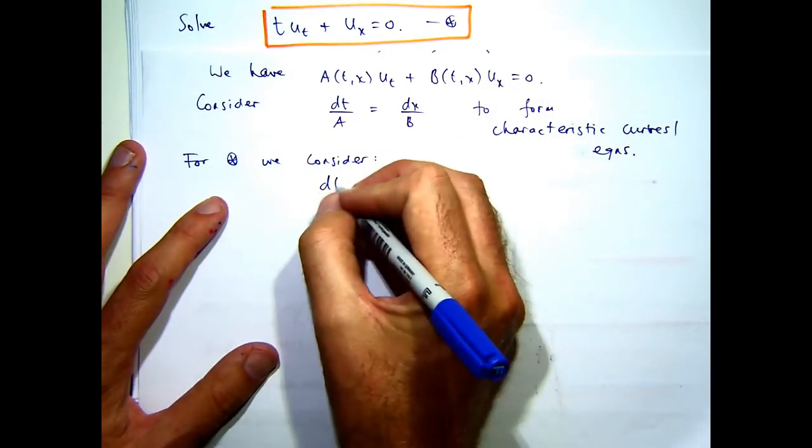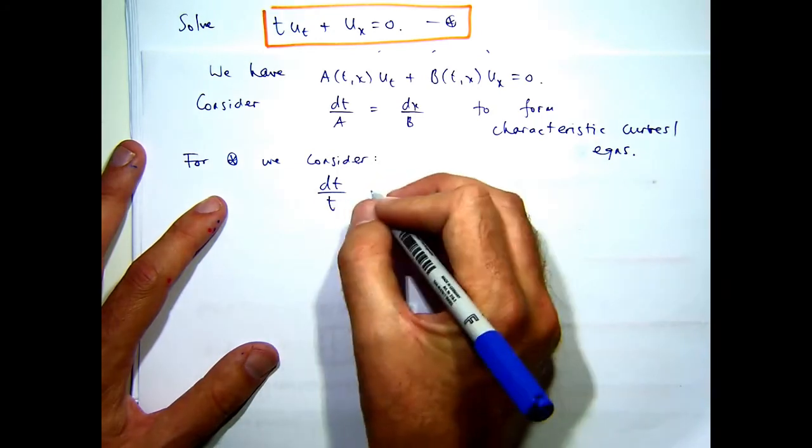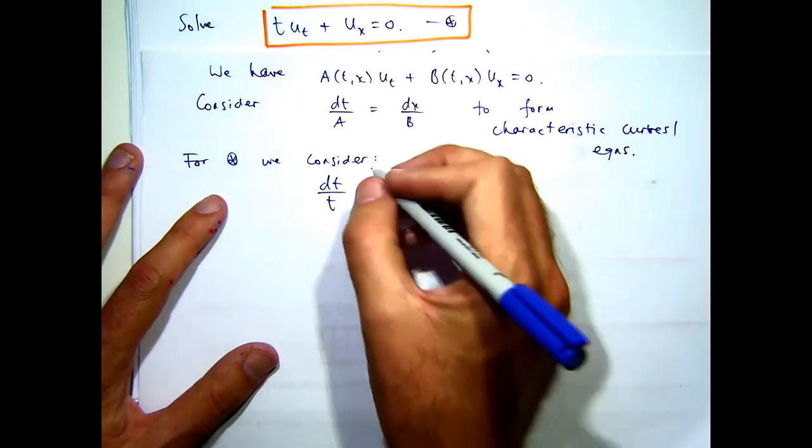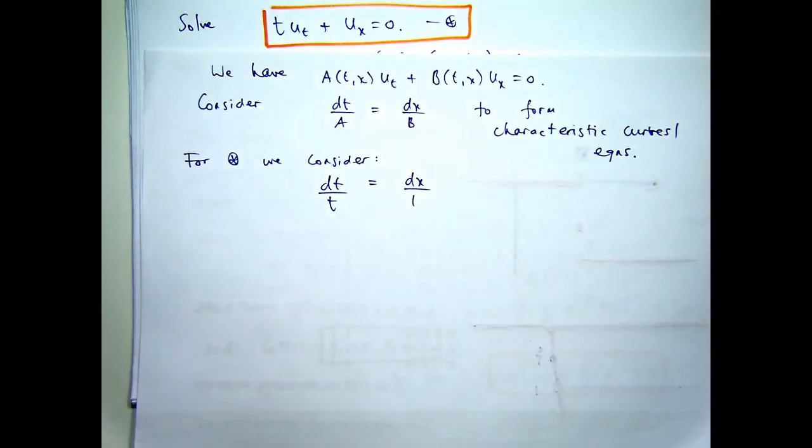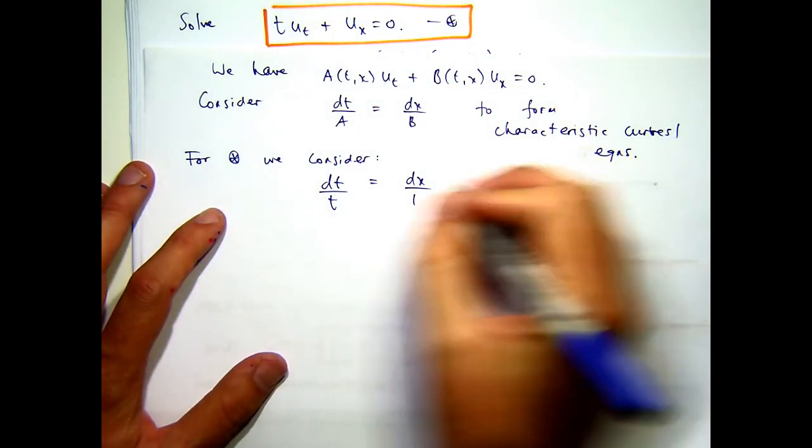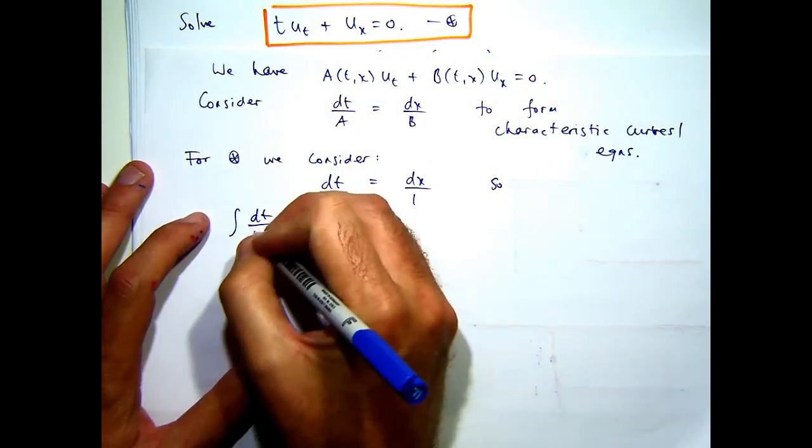So we're going to consider, so A is just T. So we can either integrate on the left, integrate on the right, just like a separable differential equation, or you can form a differential equation from that. So, this is the way I'm going to do it first.